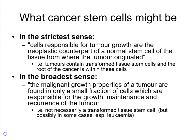In the broadest sense, a cancer stem cell population is where the malignant growth properties of a tumour are found only in a small fraction of cells responsible for growth, maintenance, and recurrence of the tumour. Unlike the strict definition, this does not require the population to resemble a normal tissue stem cell — only that it has the properties of one. There is strong evidence in leukemias that a transformed tissue stem cell is the root of the cancer, but in solid tumours such as melanoma, evidence strongly suggests that is not the case.